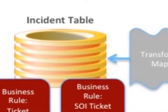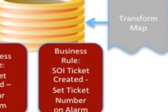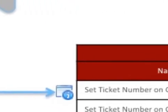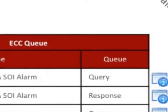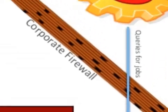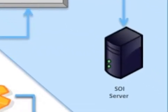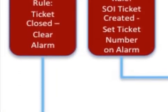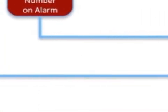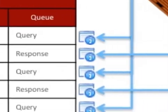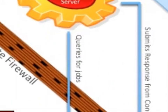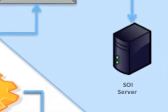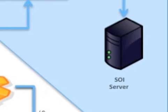In the case where an incident record is created due to an SOI alarm, a business rule on the incident table will execute a script. This script will take the ServiceNow incident ticket number and send a Java call to SOI to modify the alert by setting the incident number as the Service Desk ticket ID on the alarm. If the incident is closed within ServiceNow, a similar business rule will execute a script that sends a delete message through the Java API to the SOI server through the MID server and connector, telling SOI that the corresponding incident has been closed and therefore it can clear the alarm.